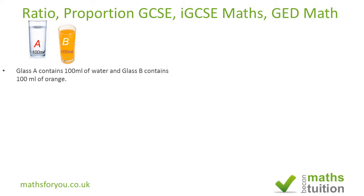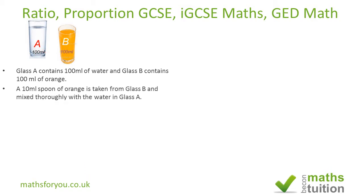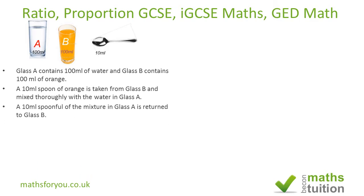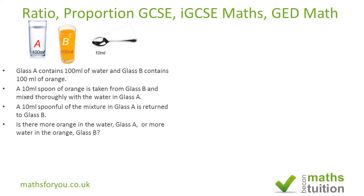We've got two glasses, A and B. Glass A contains water and glass B contains orange juice. We scoop out 10 millilitres of orange from glass B into glass A. After that, we scoop out another 10 millilitres from the mixture of water and orange in glass A back into glass B.